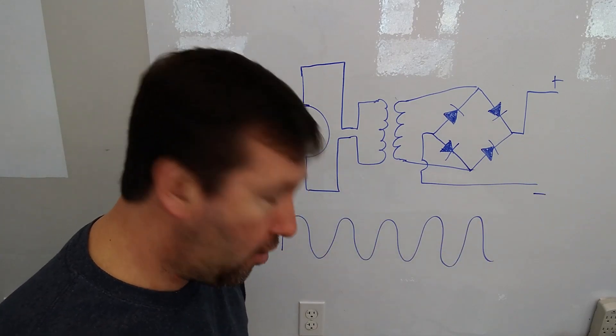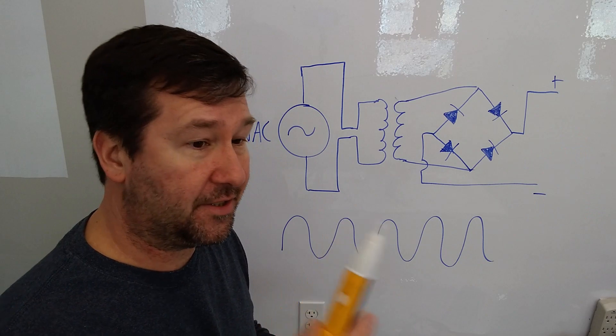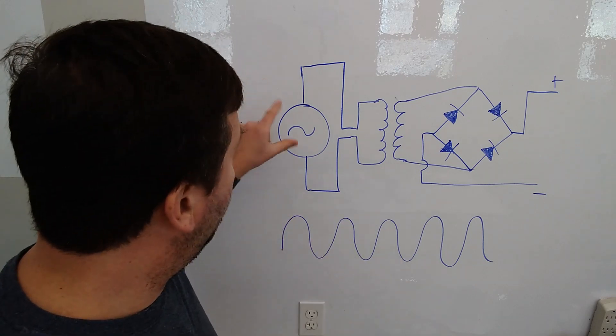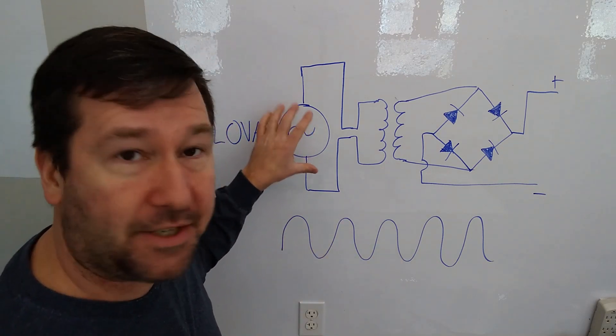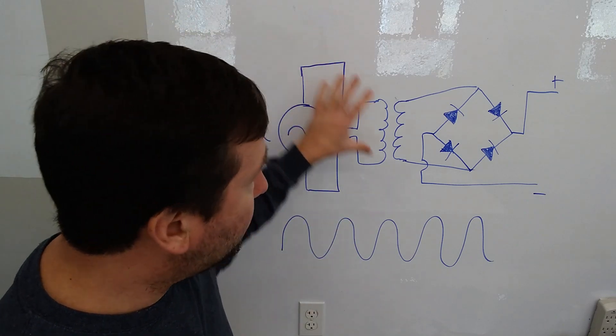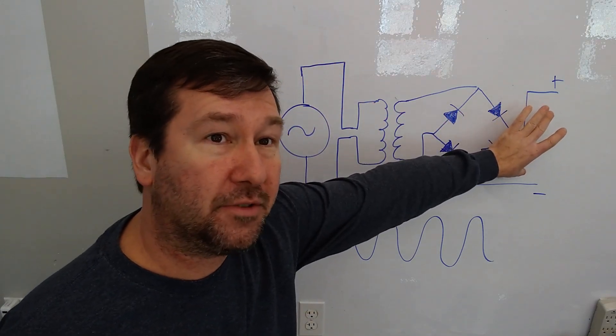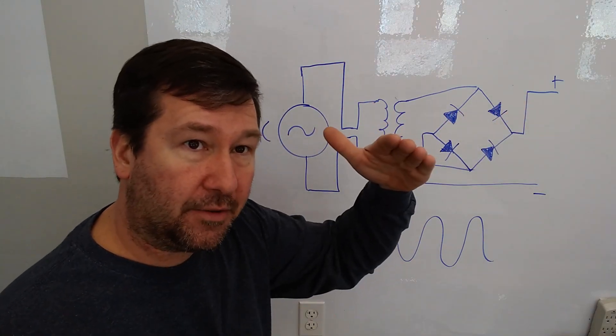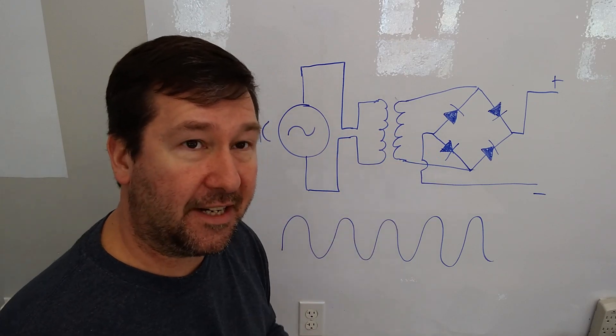Now, in order for our non-contact voltage sensor to sense, it has to see this change in magnetic field. Over here, we have a steady voltage. And if you have a steady voltage, your magnetic field is steady also, which means that we cannot sense a voltage on this side, at least if everything is perfect.